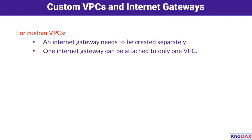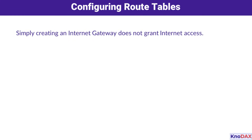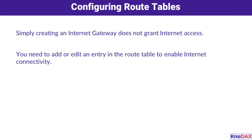Without an Internet Gateway attached, your resources in the VPC cannot directly access the Internet. Just creating and attaching an Internet Gateway doesn't automatically grant Internet access to your resources. You must add or modify entries in the route table associated with your public subnet. This configuration ensures that traffic destined for the Internet is routed through the Internet Gateway. Without this step, even with an Internet Gateway, your resources will remain isolated.